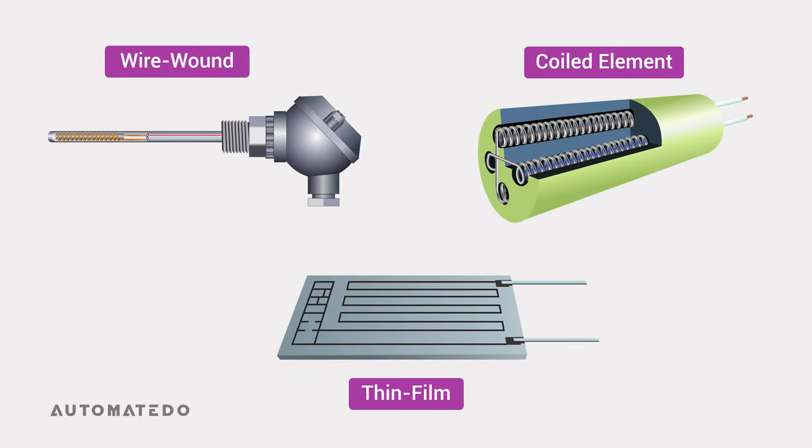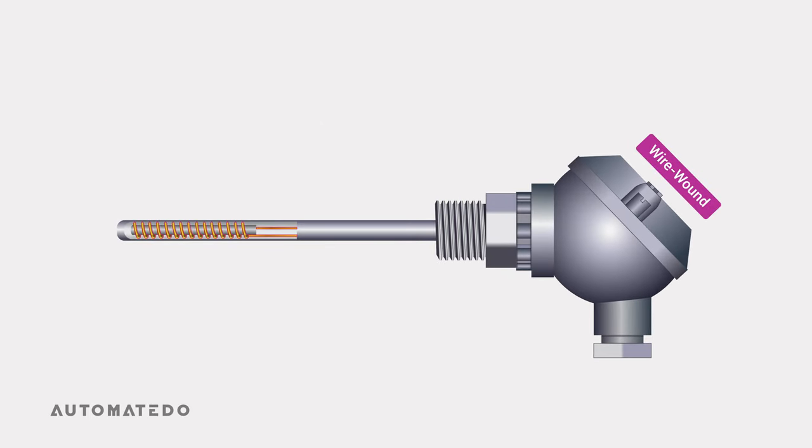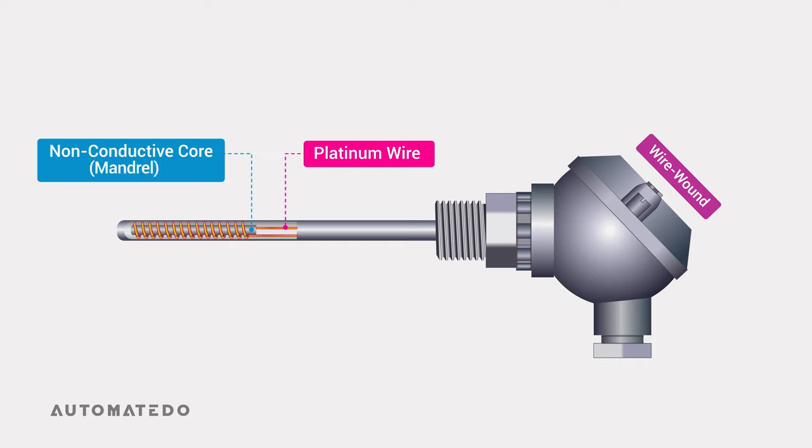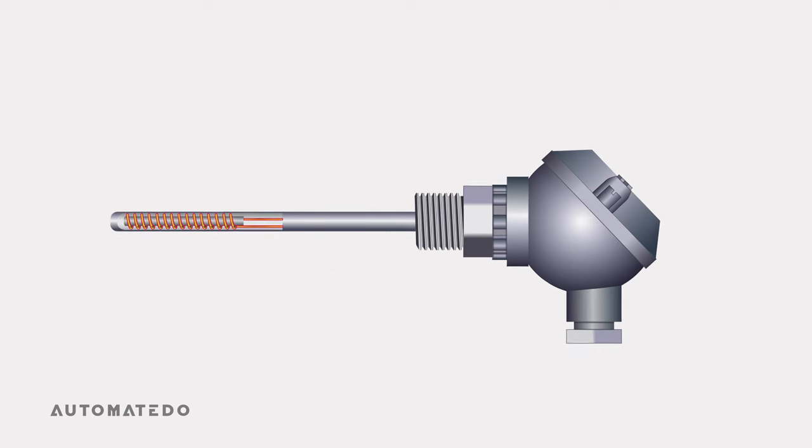Depending on the construction of the temperature sensing element, RTDs are divided into three basic types: wire wound, thin film, and coiled elements. The wire wound type consists of a small diameter platinum wire wrapped around a non-conductive core, usually made of ceramic or glass called a mandrel, inside a stainless steel tube with compacted magnesium oxide powder insulator between the inner wall of the sheath and the mandrel. The sensor makers apply an insulating material such as glass over this structure to provide protection and make the sensor withstand high temperatures.